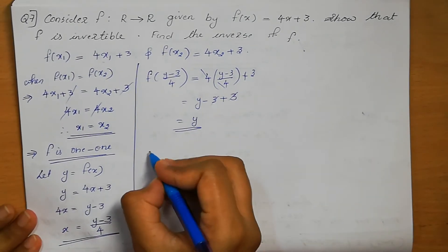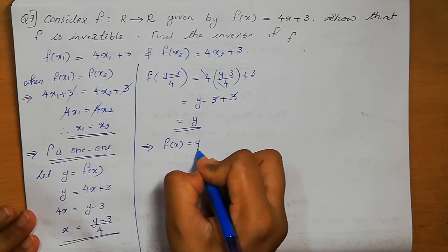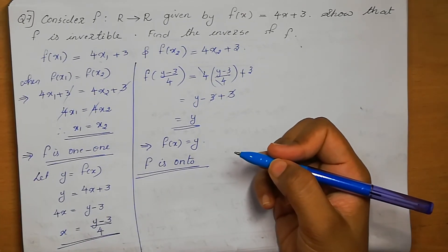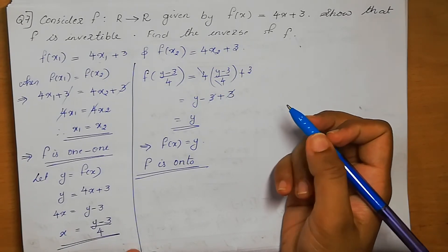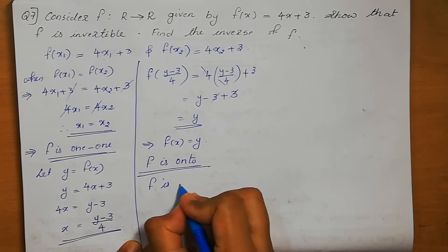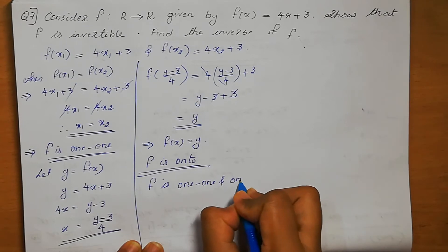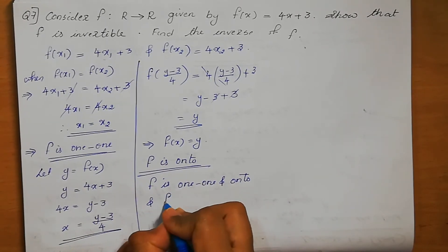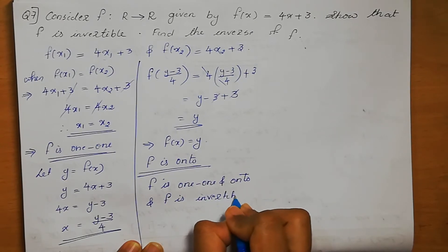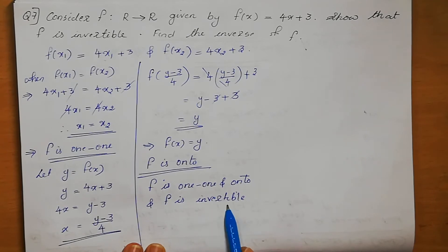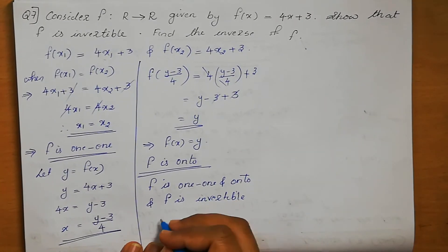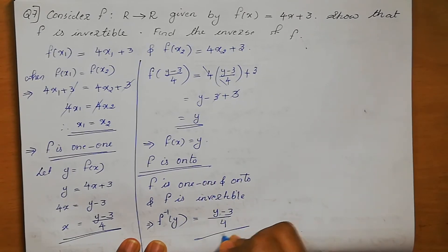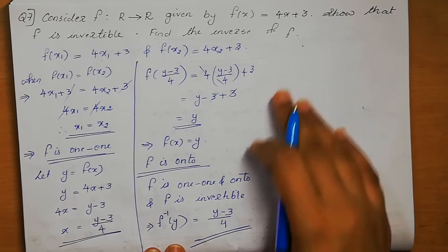That means f(x) = y, so the function f is onto. The function f is 1-to-1 and onto, which means f is invertible. Therefore f⁻¹(y) = (y-3)/4. This is the answer — (y-3)/4 is the inverse of the function f.